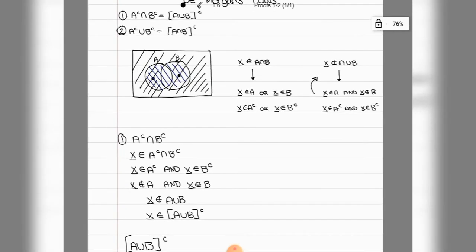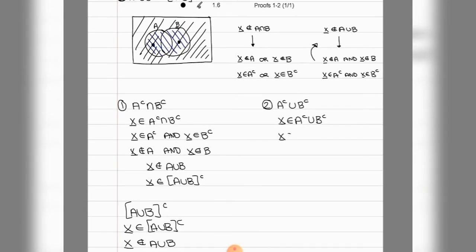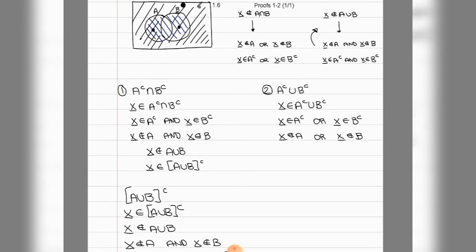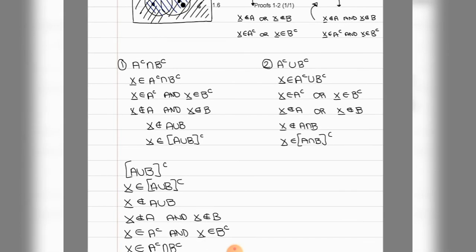The second law is going to be extremely similar. We start off focusing on the union of the two complements. If X belongs to the union, then it has to belong to at least one of the two — so it has to belong to A complement or B complement. If that's the case, then X does not belong to A or X does not belong to B. If it does not belong to at least one or the other, then X is definitely not going to belong to the intersection, which means it has to belong to the complement of the intersection. It's extremely similar, except that instead of 'and,' we use 'or.'